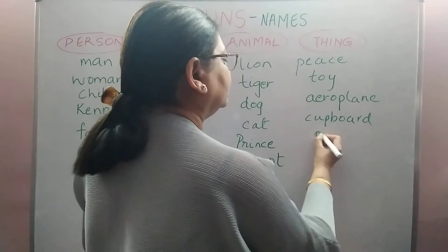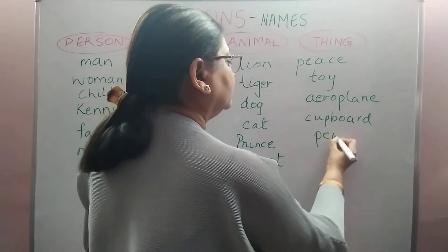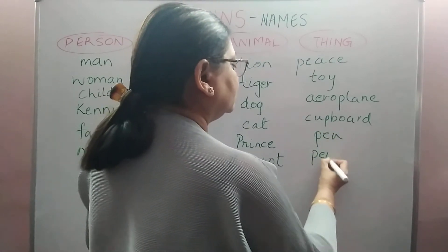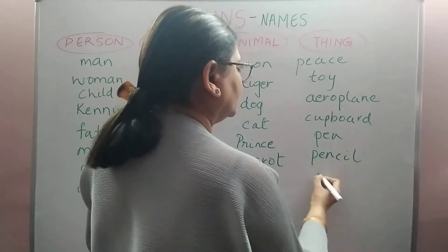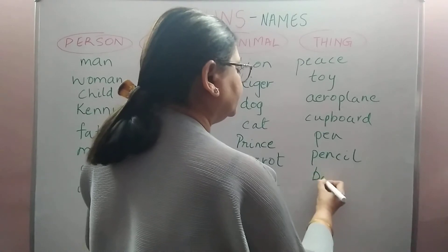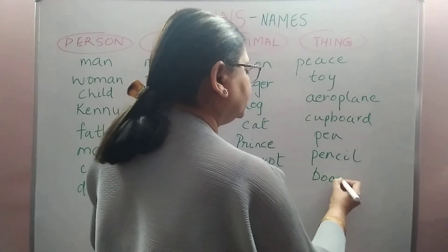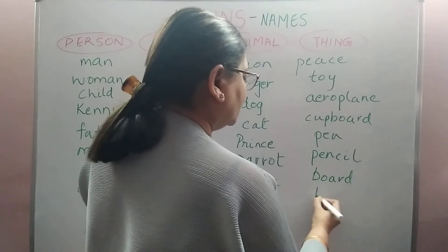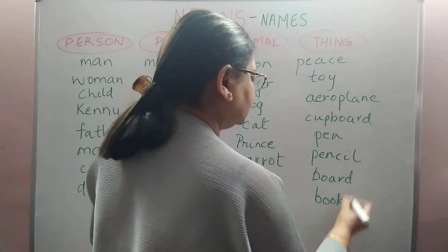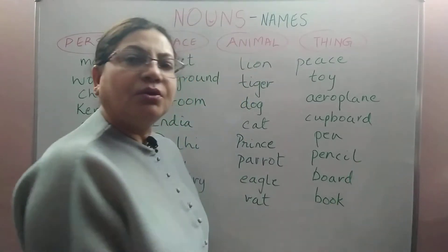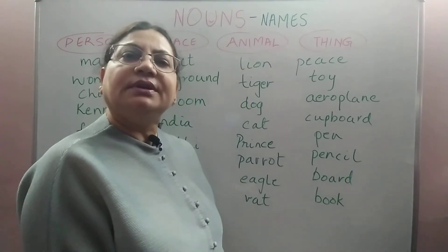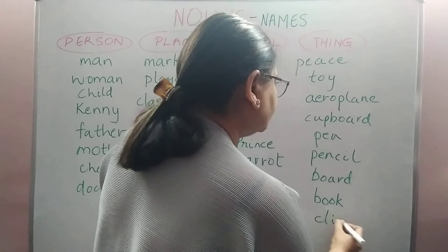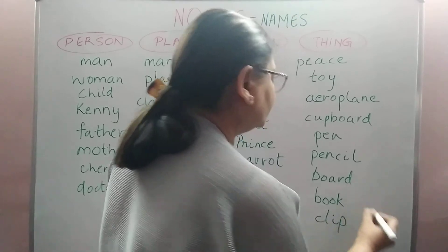A pen, or a pencil, or a board — all these, friends, are nouns. Or the book on which you write, or even a clip, a paper clip — that could also be a noun.